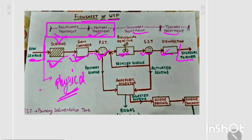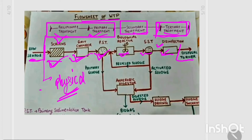If we talk about the chemical category, that corresponds to the tertiary treatment stage — specifically disinfection, which is a chemical process. The secondary treatment is the biological process, and the secondary sedimentation tank is also part of the secondary treatment plant.